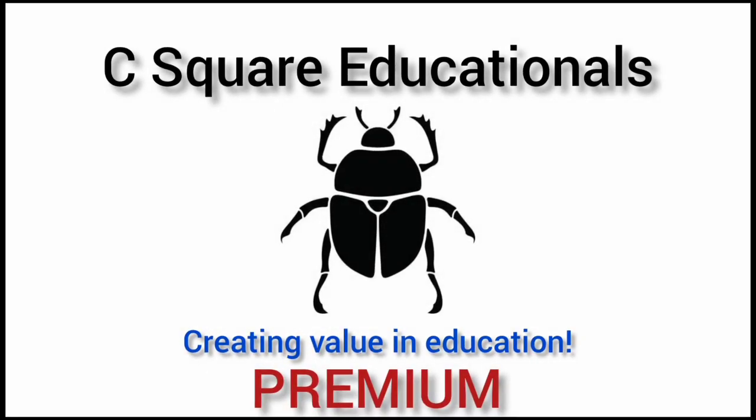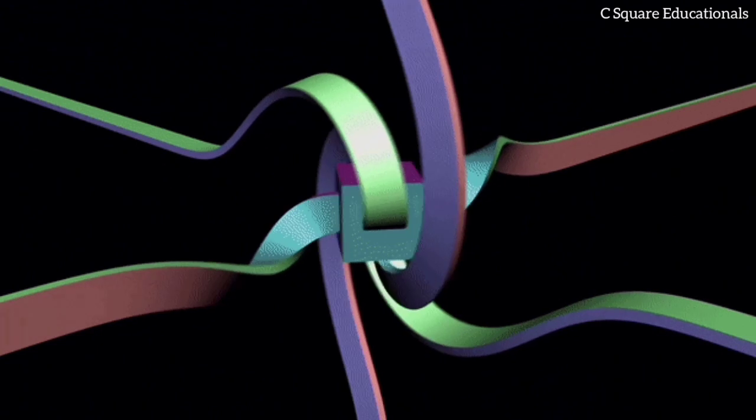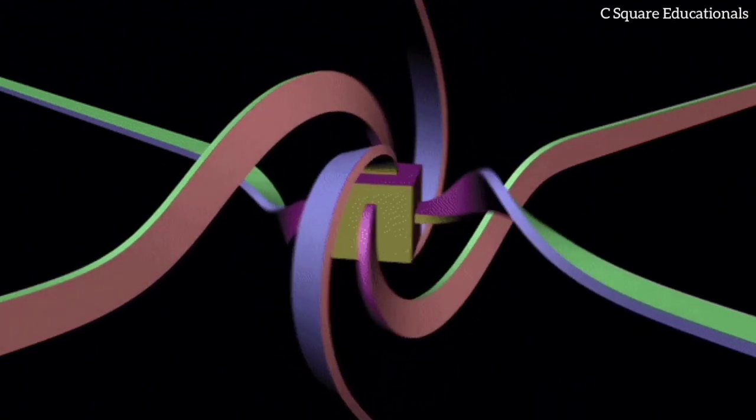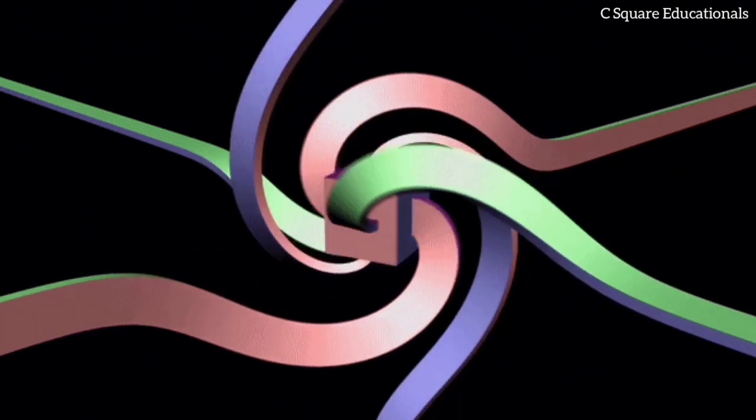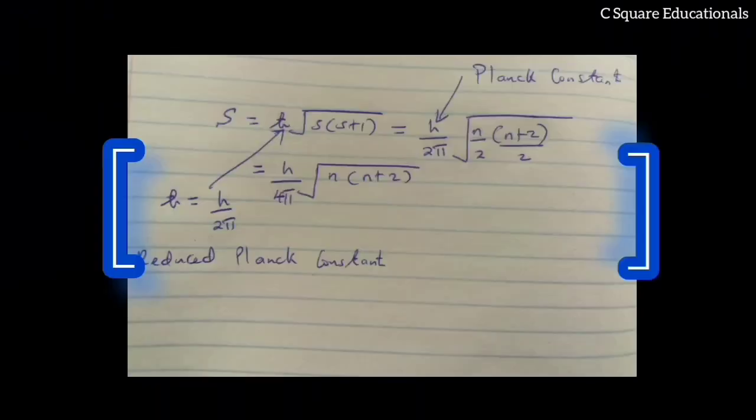This episode is brought to you by C Square Educational Premium. The spin angular momentum S of any physical system is quantized. The allowed values of S are: S equals reduced Planck's constant times root of S(N+1), which is equivalent to Planck's constant over 2π times root of N(2N+2)/2, which equals h over 4π times root of N(N+2), where h is Planck's constant and h-bar is the reduced Planck's constant equivalent to h over 2π.